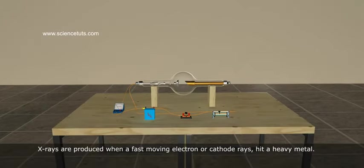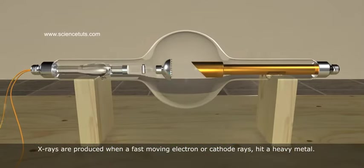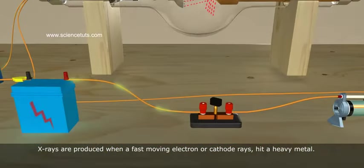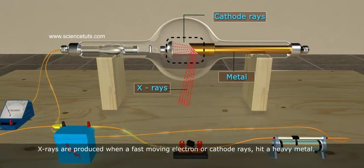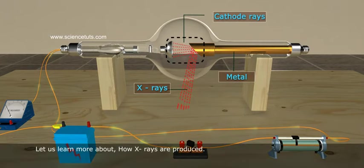As we learned earlier, X-rays are produced when a fast-moving electron or cathode rays hit a heavy metal. Let us learn more about how X-rays are produced.